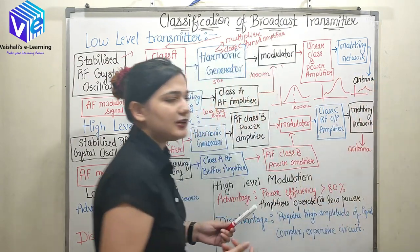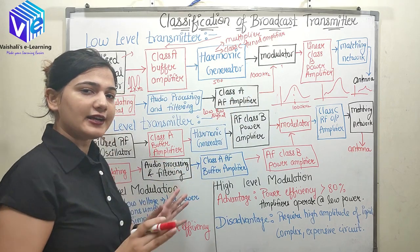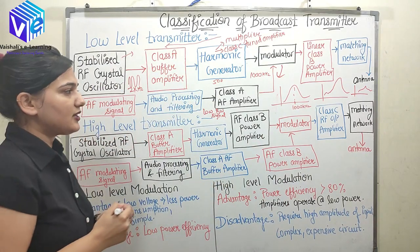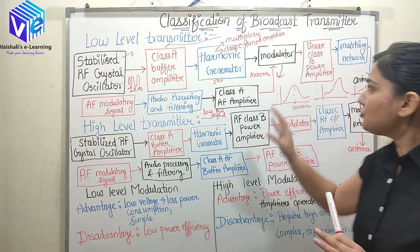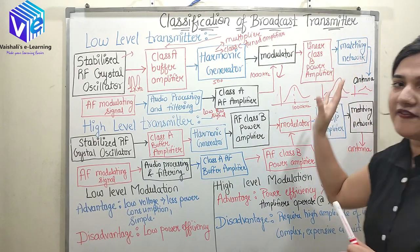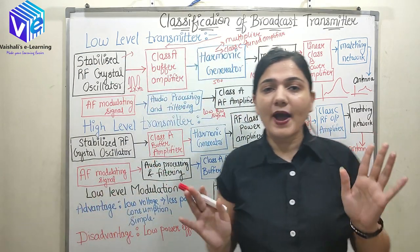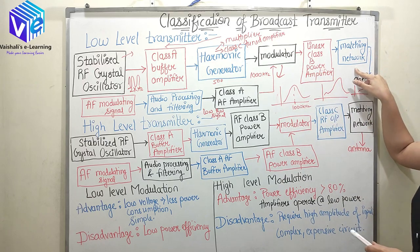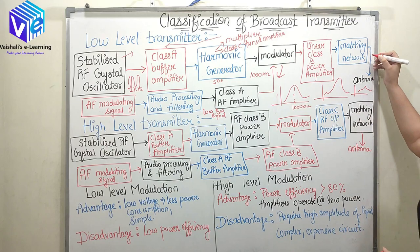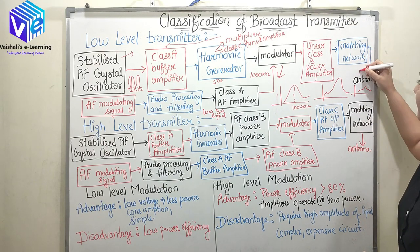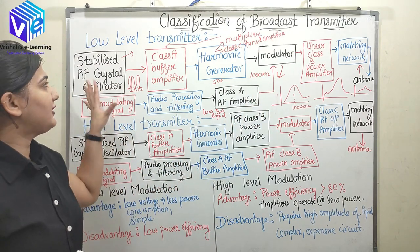After audio processing and filtering, we have a class A AF buffer amplifier, again a high impedance amplifier used to restrict the backward flow of load current. Then we have the modulator — any type of amplitude modulator can be used here. After that comes the linear class B power amplifier, which increases the power of the modulated signal. Finally, the matching network ensures minimum power wastage by matching the signal impedance to the antenna, preventing reflections before transmission.